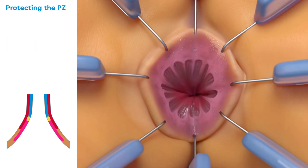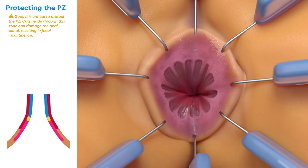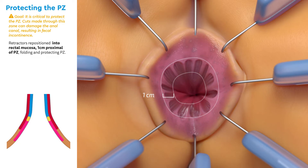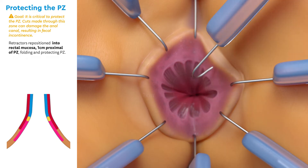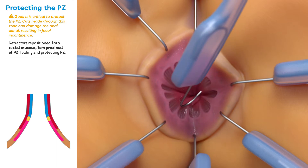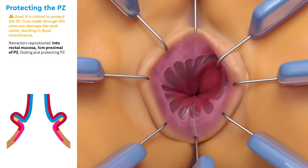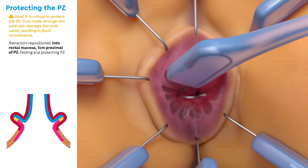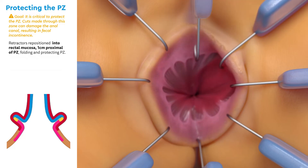Protecting the pectinate zone is critical to this operation. Cuts made within this zone will damage the anal canal, resulting in fecal incontinence. The retractors are repositioned into the rectal mucosa 1 cm proximal of the pectinate zone. This folds the pectinate zone under the retractors, protecting it for the duration of the operation.